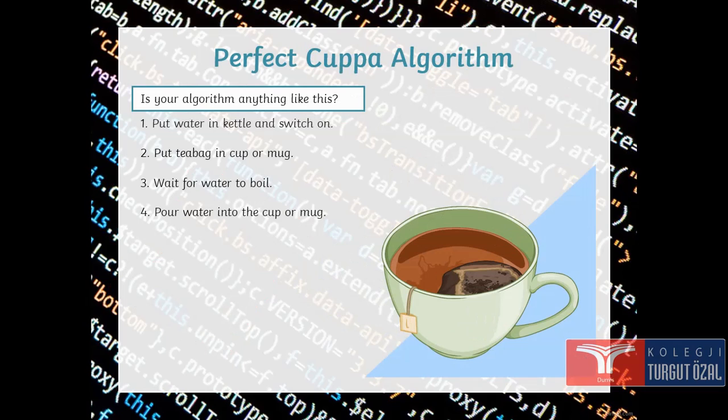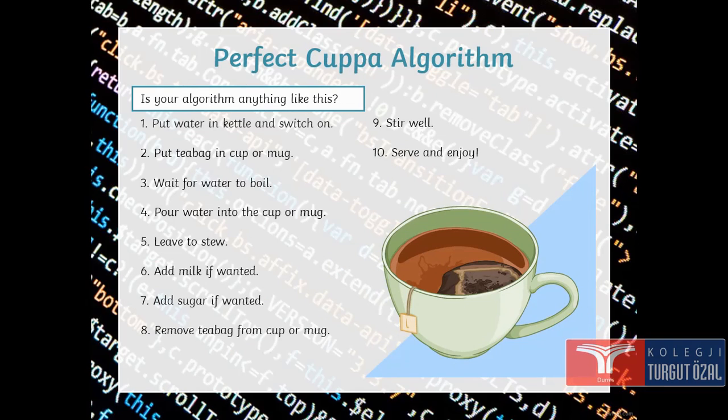Perfect cuppa algorithm. If you use your algorithm anything like this: put water in kettle and switch on, put tea bag in the cup or mug, wait for water in the cup or mug, leave to stew, add milk if wanted, add sugar if wanted, remove tea bag from cup or mug, stir well, serve and enjoy. Are these your steps?